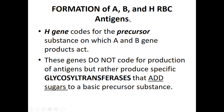The A, B, O genes are located on chromosome 9, whereas the H and SE genes are closely linked and located on chromosome 19. So chromosome 9 carries the genes that will eventually express A, B, or O antigens on the red blood cell surface, while chromosome 19 carries the H and SE genes.